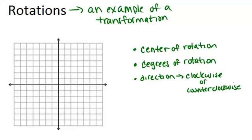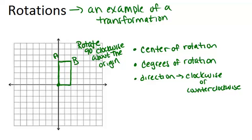Lastly, you need to know the direction, which could be clockwise or counterclockwise. If you know all three of those things, you should be able to perform the rotation. So for example, what if we wanted to rotate this rectangle 90 degrees clockwise about the origin?